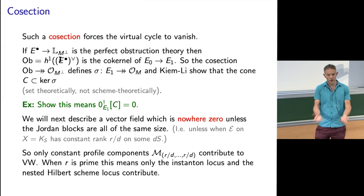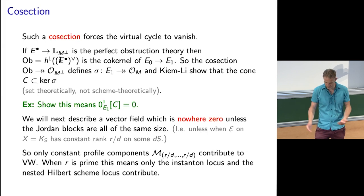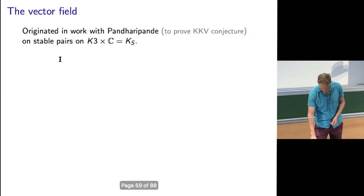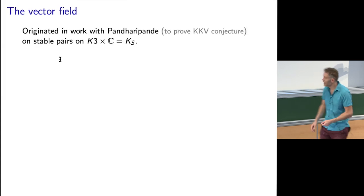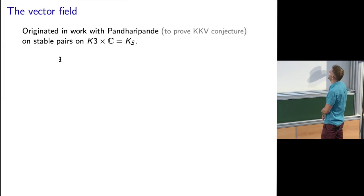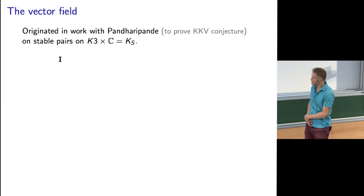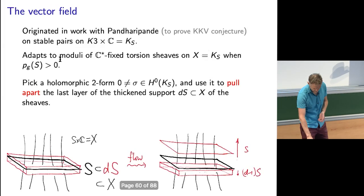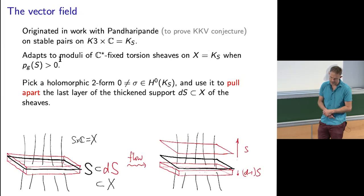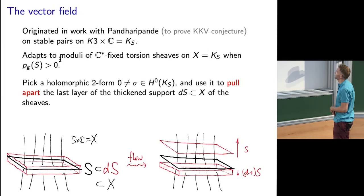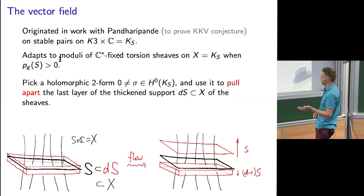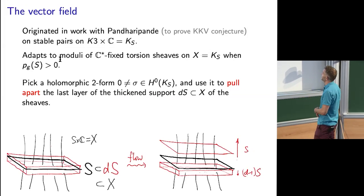The upshot is we need a vector field on these components of the moduli space which doesn't vanish anywhere. Here's the vector field — it originated in earlier work with Rahul Pandharipande on stable pairs, but it works perfectly for any kind of sheaf theory. We're going to discuss things not in terms of Higgs bundles but in terms of sheaves on the threefold.